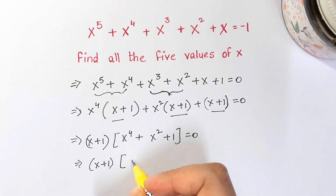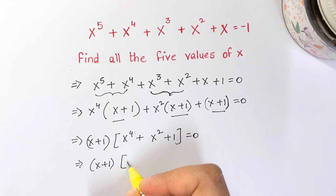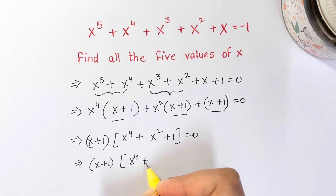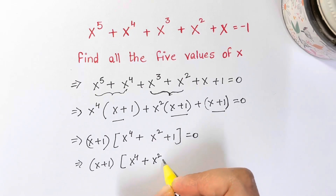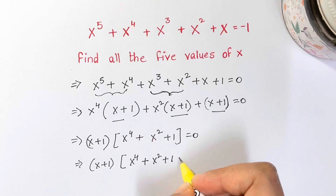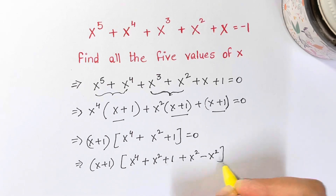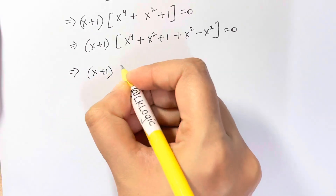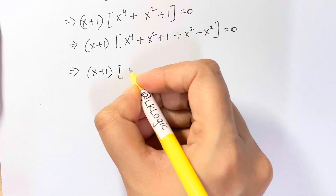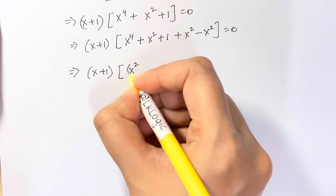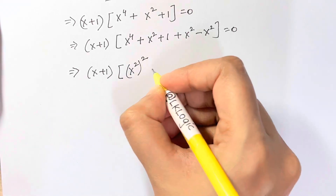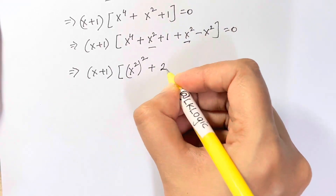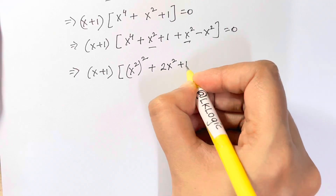To factor x⁴ + x² + 1, we add and subtract x² to form a perfect square: x⁴ + x² + 1 + x² - x². We can write x⁴ as (x²)², so we now have (x²)² + 2x² + 1 - x².